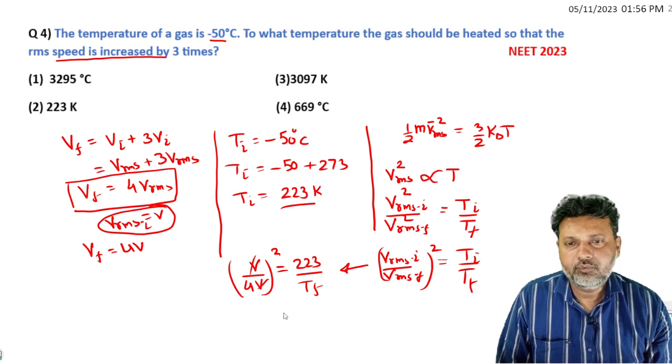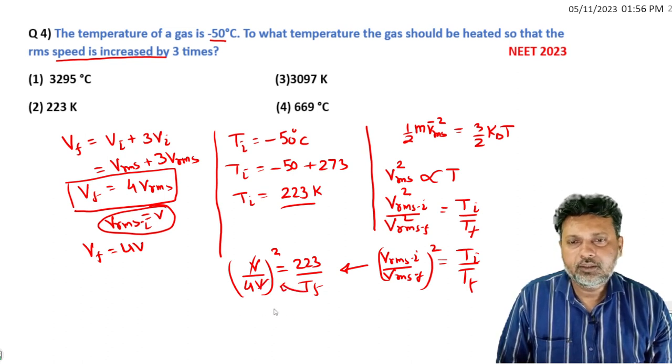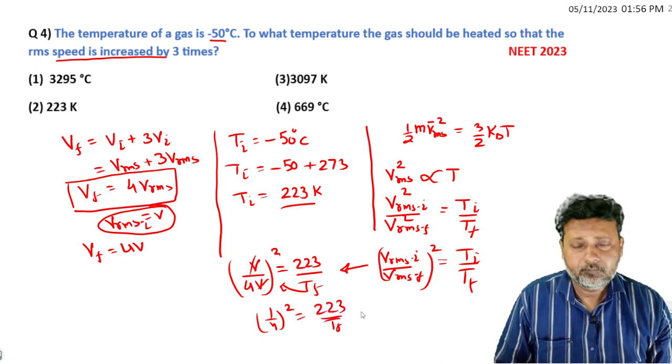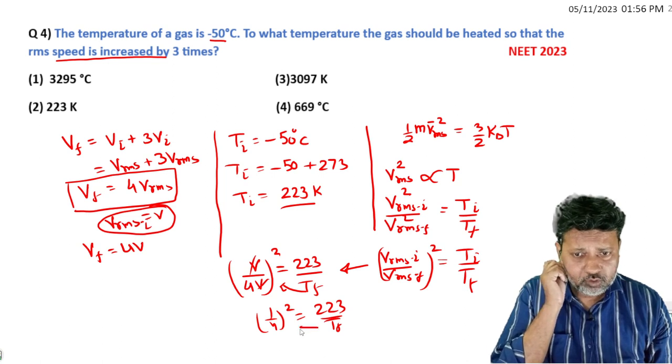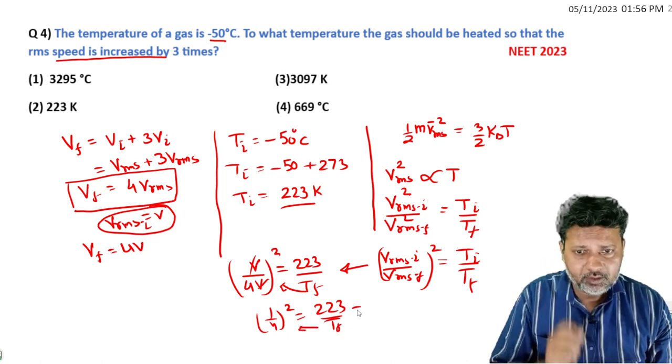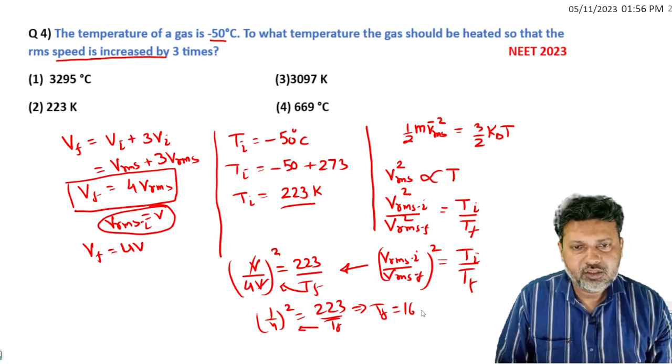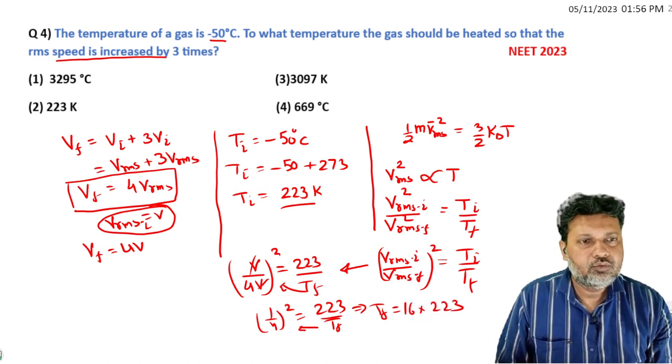Now, 4V whole square upon V equals 223 divided by T_final. V cancels out, giving 1/4. Now cross multiply: 16 is equal to 223 by T_final. Cross multiplying gives T_final equals 16 into 223.